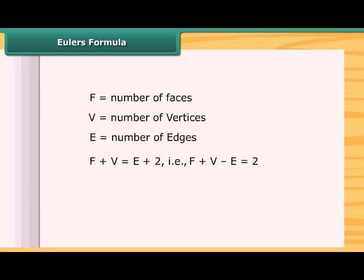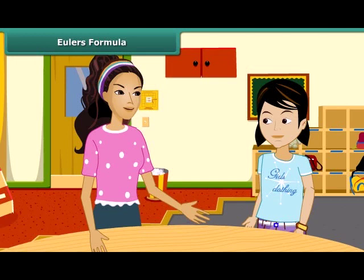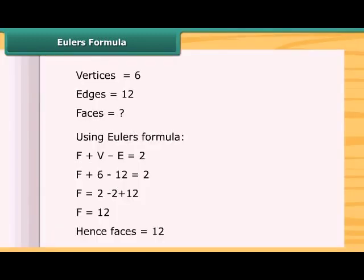This formula is true for any polyhedron. If the number of vertices and number of edges of a polyhedron is given, then we can find the number of faces of that polyhedron using Euler's formula. And if the number of faces and number of vertices are given, then can we find the number of edges? If two values are given, then we can find the third value using Euler's formula. Here is an example.